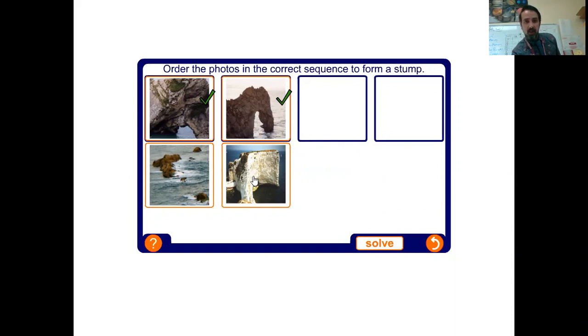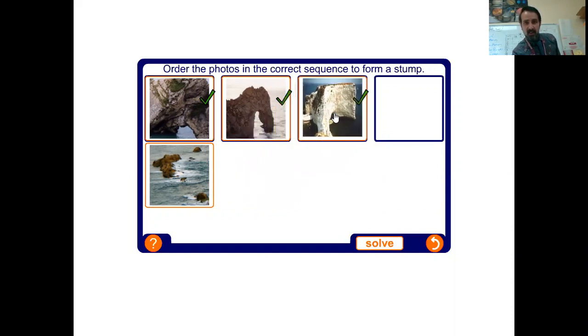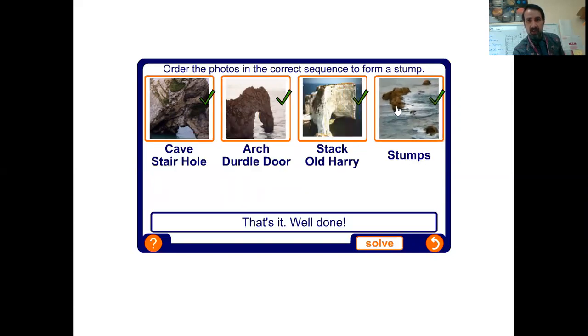The softer rock, which erodes quicker, will then result in a stack. That's a stack from the Needles in the Isle of Wight, it's chalk. And then we know through abrasion and hydraulic action the base of this stack will be undercut and fall down, and we get our sunken features or stumps.